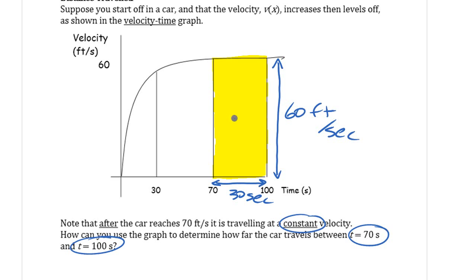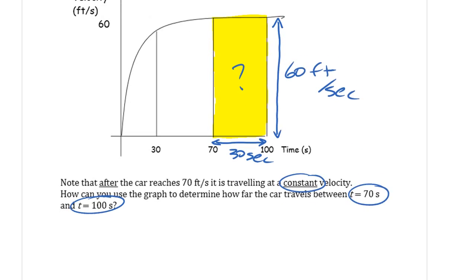So if you work out this area here, that area is whatever the width of that rectangle is - width times the height. You're just using what you know about geometry: area of a rectangle.